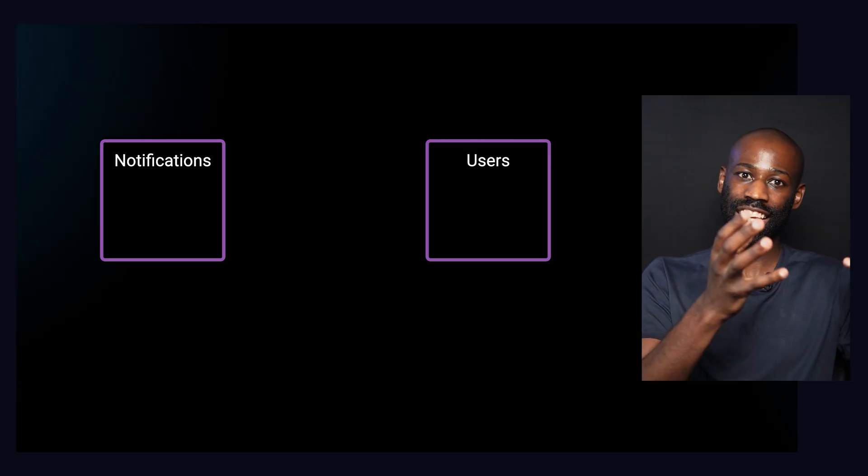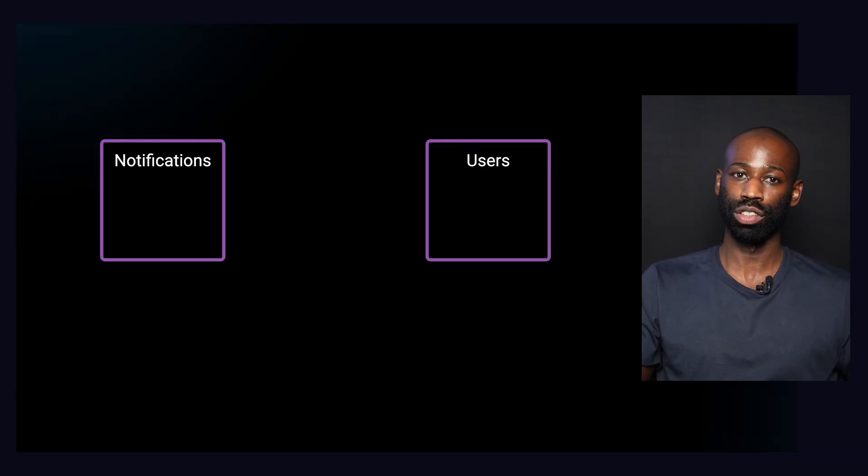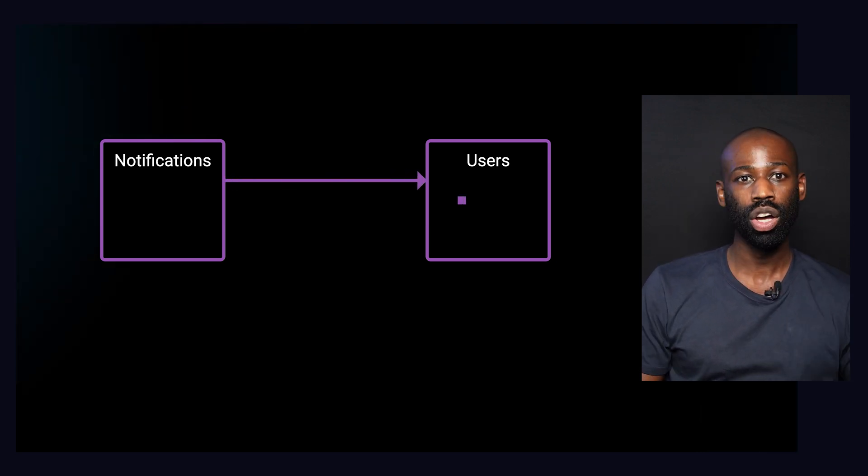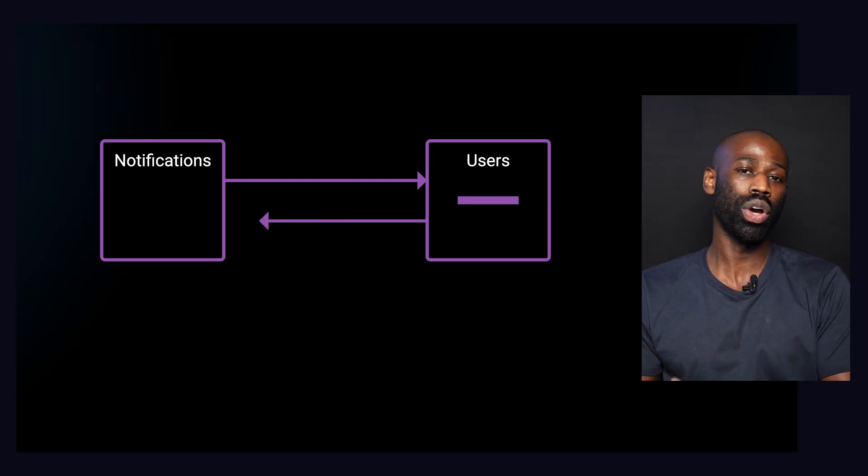Let's take a notification service that needs to get the user information to send an email. If you are familiar with the microservices architecture, you already know that the user information is not directly available inside the notification service — the user info will be stored in the user service. The two services run in different processes and potentially on different machines, which means the notification service can send a request over the network to the user service and wait for a response.